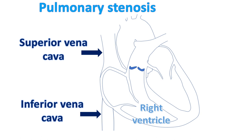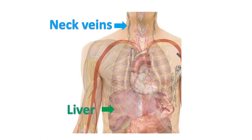Congestion of the inferior vena cava can cause hepatosplenomegaly in late stages, and there can be a presystolic pulsation corresponding to the prominent A wave in the jugular venous pulse. Pedal edema occurs when right heart failure sets in. Ascites can occur in advanced cases. Jugular venous pressure gets elevated when right heart failure occurs, and hepatic and renal dysfunction can occur in late stages.